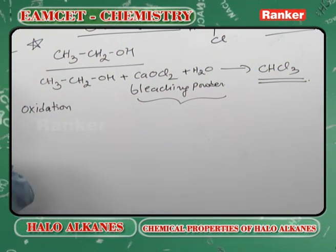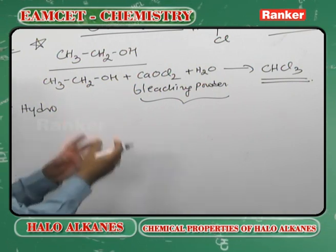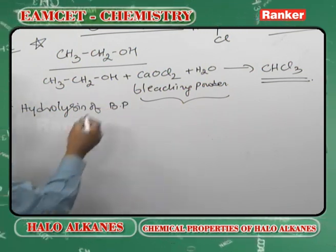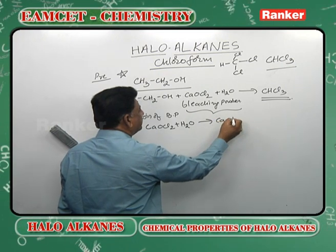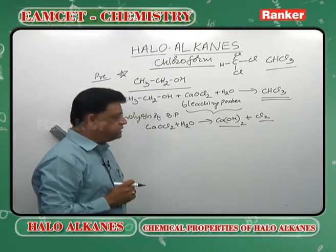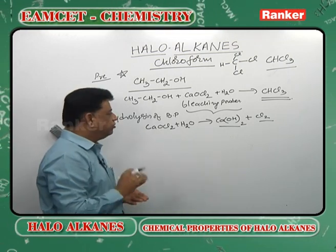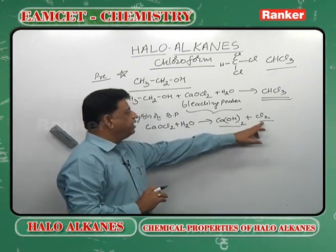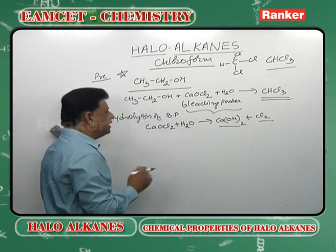Before oxidation, we consider hydrolysis of bleaching powder, since bleaching powder does not react directly. Calcium oxychloride reacts with water to give calcium hydroxide and liberate chlorine — we are interested in this base and the halogen. Instead of calcium hydroxide you can use sodium hydroxide or potassium hydroxide. Instead of chlorine you can take bromine or iodine. When you use chlorine the final product is chloroform; if you use bromine, bromoform is formed; with iodine, iodoform is formed — these share a common haloform reaction.